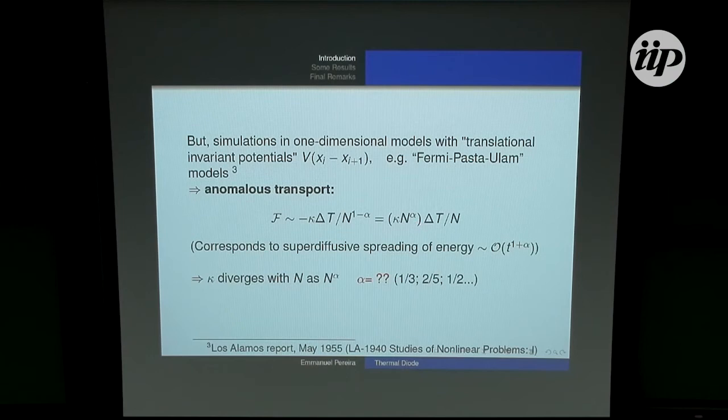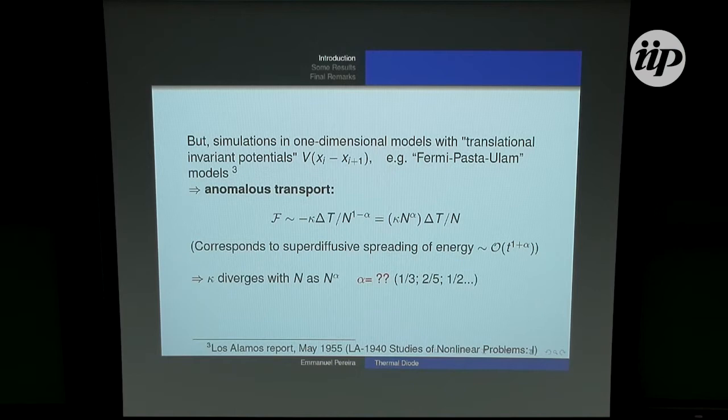If you try to write the heat flow as proportional to the gradient of temperature, you'll get a thermal conductivity that diverges as you increase the system size. The open problem is to determine the value of alpha — the exponent of divergence. In fact, we don't even know if there is just one or two or more universality classes.